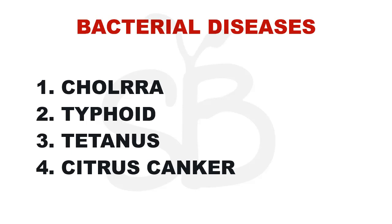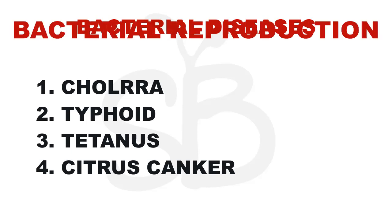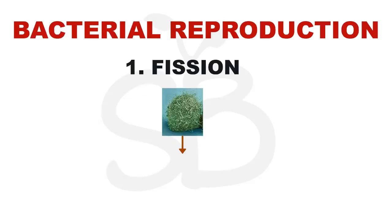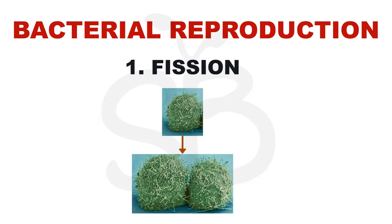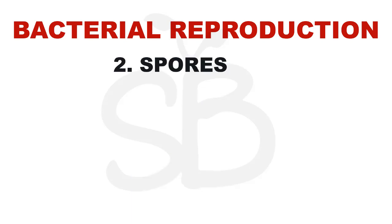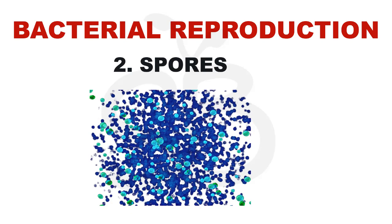Bacterial diseases include cholera, typhoid, tetanus, and citrus canker. Next is bacterial reproduction. Usually bacteria reproduce by fission — one single bacterium divides into two new bacteria. In unfavorable situations, they reproduce by spores. When favorable conditions return, the spores become bacteria again.